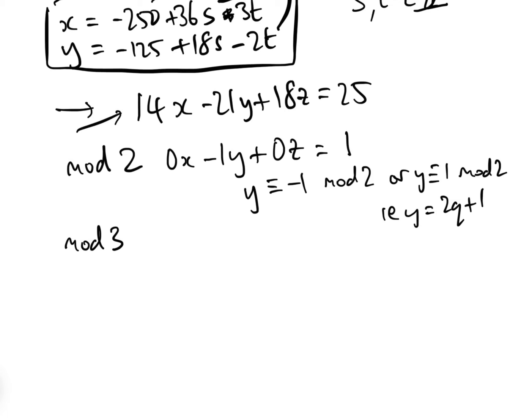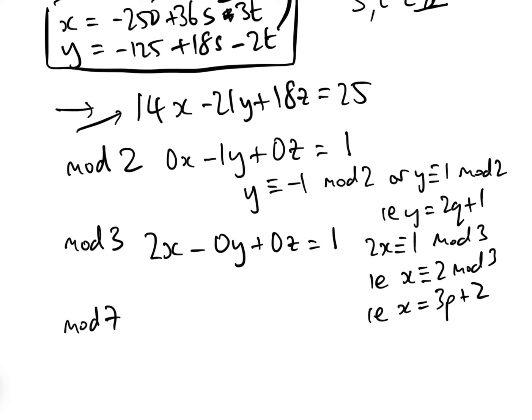Now let's look mod 3 at the entire equation. 14 mod 3 is 2, so that's 2x. 21 is 0 mod 3, and 18 is 0 mod 3, and 25 is 1. So we have 2x equals 1 mod 3. If x is 2, then 2 times 2 is equal to 1 mod 3, i.e. x equals 2 mod 3, i.e. x equals 3P plus 2 for some P in the integers.